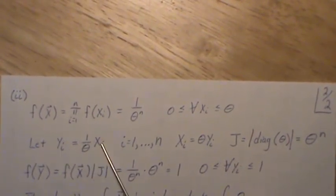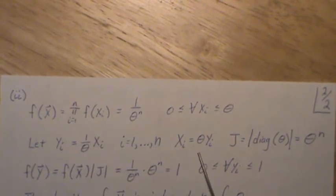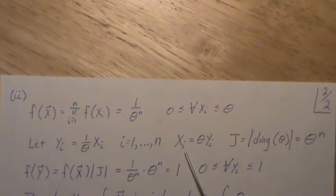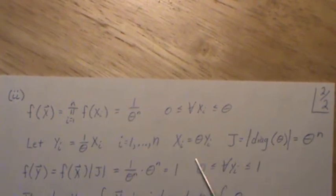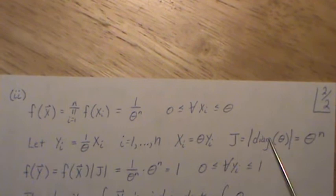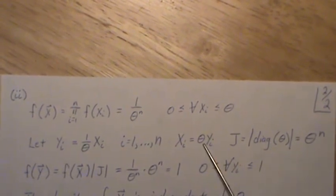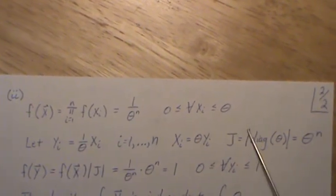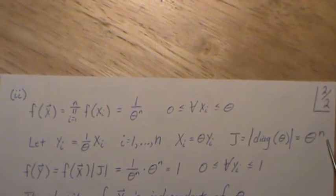So then you solve for xi. Then the Jacobian is, remember, this is for x1, x2, x3, etc. So when you find the Jacobian, you get a diagonal matrix with theta down the middle. So its determinant becomes theta raised to the n.